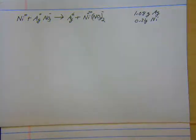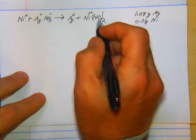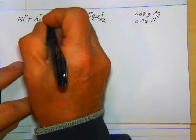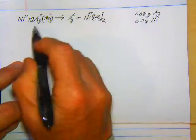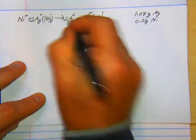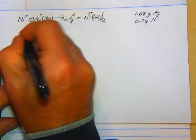So we balanced it for charges. Now we need to go back and balance for coefficients. You can pretty easily see 2 nitrate. We've only got 1 here, so we need a 2 there, 2 silver, 2 silver, 1 nickel, 1 nickel. Looks pretty good. I'll rewrite this to make it a little cleaner.